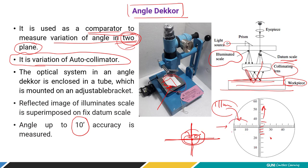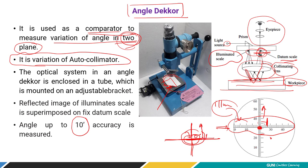The image of the illuminated scale is superimposed at 90 degrees due to reflection of the collimating lens over the datum scale. The point of intersection tells you the angle of tilt in both planes — the horizontal scale shows horizontal tilt and the vertical scale shows vertical tilt. The difference from the initial set position gives you the measurement: how much the surface is tilted horizontally and vertically.